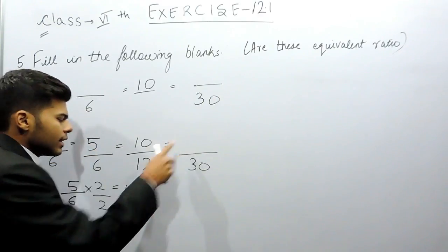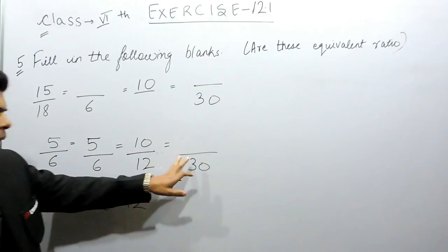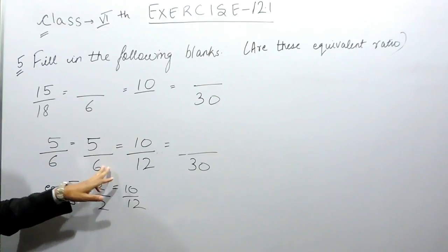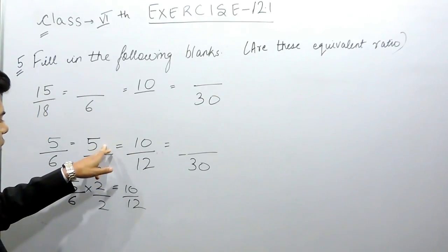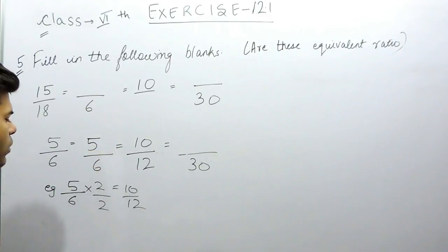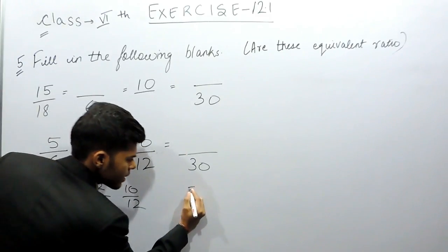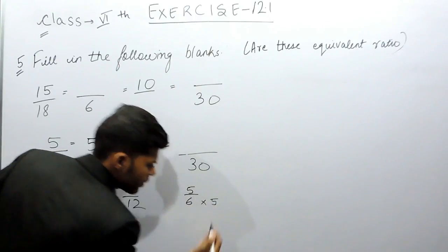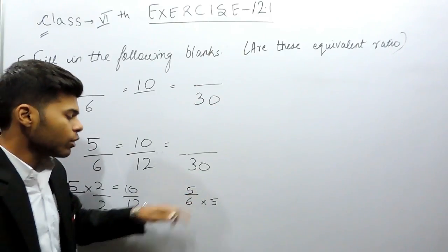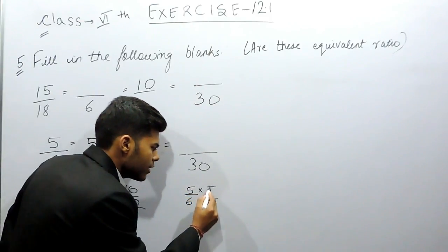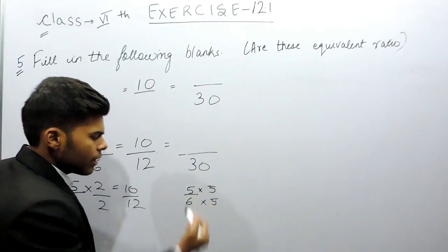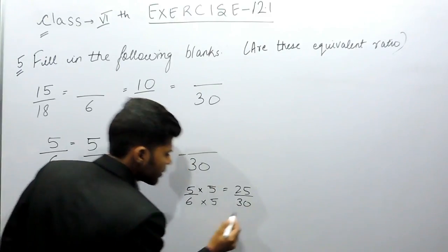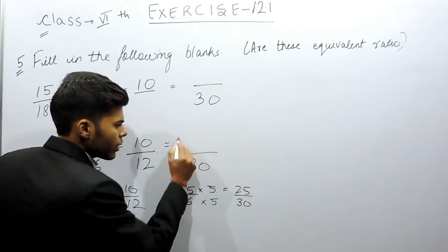Now we'll again compare five upon six. We have to make it thirty in the denominator, which means we have to multiply five with six. So if we multiply five with six, we also have to multiply five with five. What I am saying is: this is five upon six — to make it thirty, we'll multiply it with five. So if we multiply this term with five, we have to multiply the other term with five also, so there is no difference. They can be cancelled out, so it will be twenty-five by thirty.